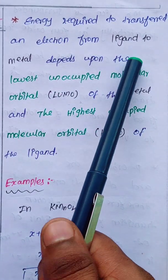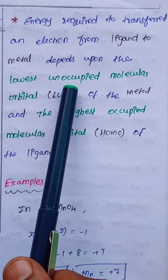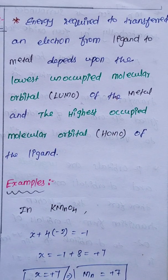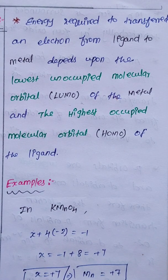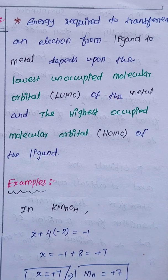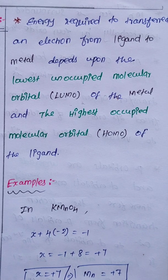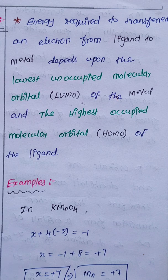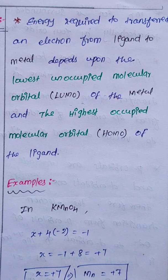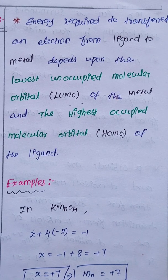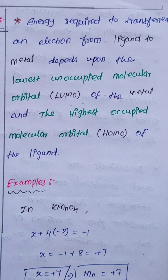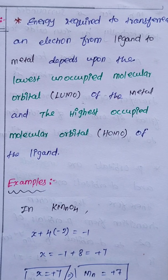The energy required to transfer an electron from ligand to metal depends on the LUMO (lowest unoccupied molecular orbital) of the metal and the HOMO (highest occupied molecular orbital) of the ligand. So the conditions for LMCT are: metal in high oxidation state with vacant orbitals, ligand with lone pair electrons, high-energy molecular orbital, and low electron affinity. The remaining topics will be discussed in the next video. Thank you.